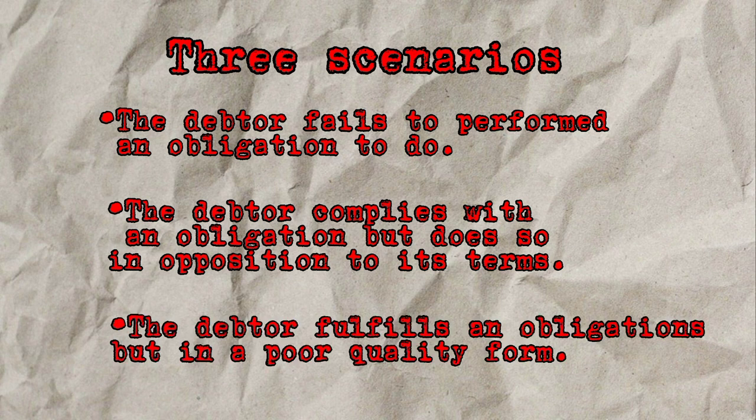The third scenario: the debtor fulfills an obligation but in a poor quality form — meaning hindi opposite, nagawa niya, pero hindi nagawa ng sakto. So those are all three scenarios of Article 1167.